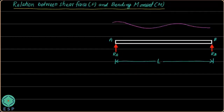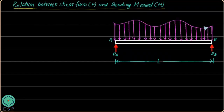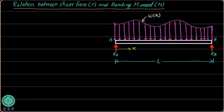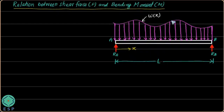Now the loading of the beam can be of any nature — there may be point loads or variable loads acting on the beam. For the sake of simplicity, let's consider a variable kind of loading so that all possible cases of loading can be covered. This variable loading is acting on the beam from point A to point B, with a load intensity varying with X, which is the distance along the length of the beam. Variable loading is used to simulate all possible cases: point load, uniformly distributed load, or uniformly varying load.